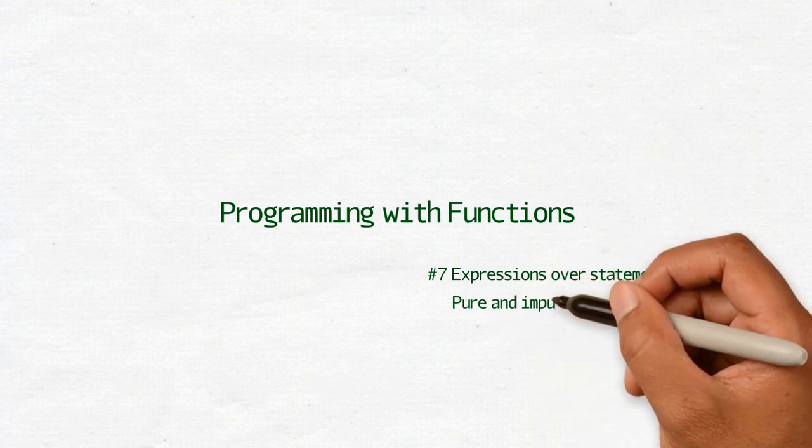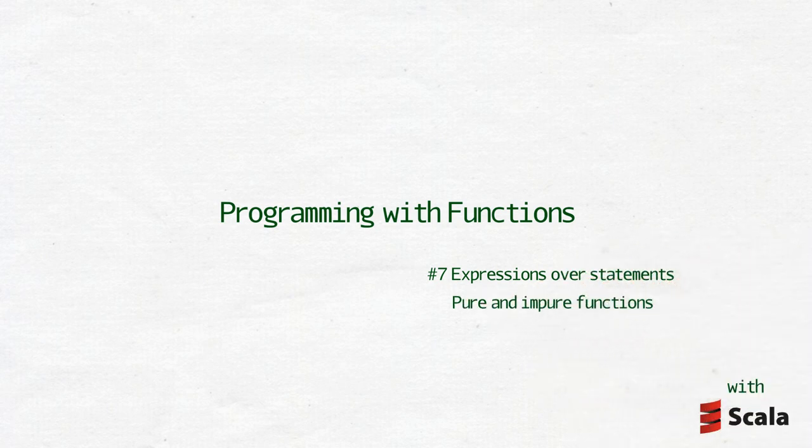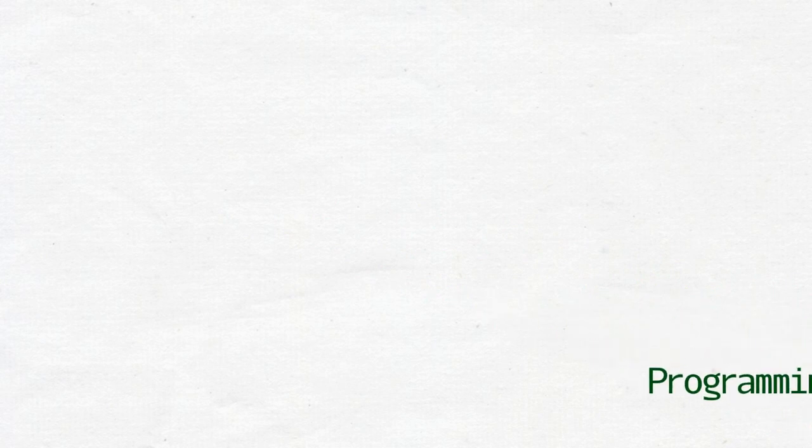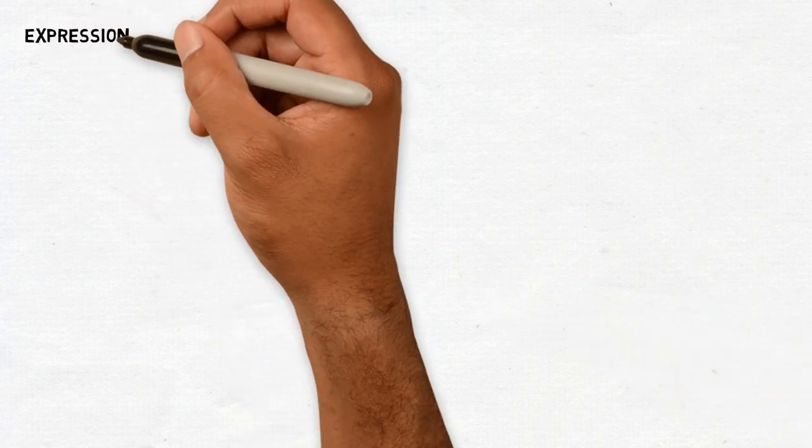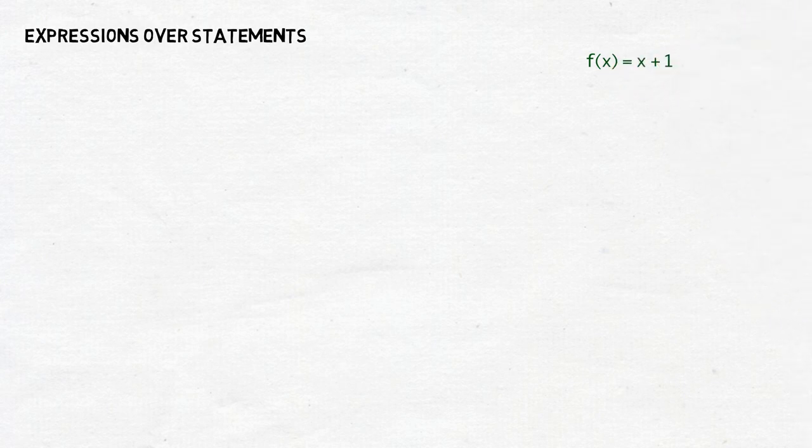When writing code in the imperative style, we build functions with statements. It's how we order the program to do something. Get data from here, modify it like that, save it there.